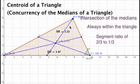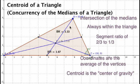And then the final property is that the coordinates of the centroid are the average of the x and y coordinates of each of the vertices, which makes it the balance point of the triangle.